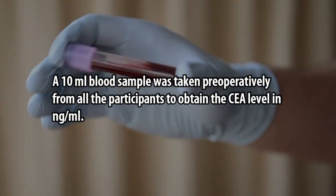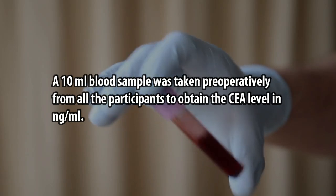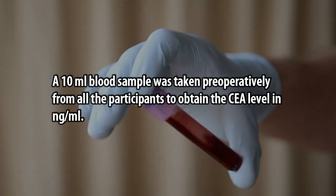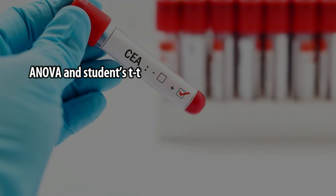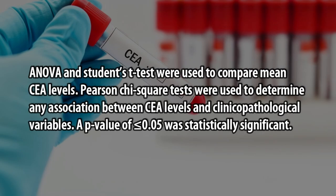A 10 ml blood sample was taken preoperatively from all the participants to obtain the CEA level in ng/mL. ANOVA and Student's T-Test were used to compare mean CEA levels. Pearson Chi-Square tests were used to determine any association between CEA levels and clinicopathological variables. A p-value of less than or equal to 0.05 was considered statistically significant.